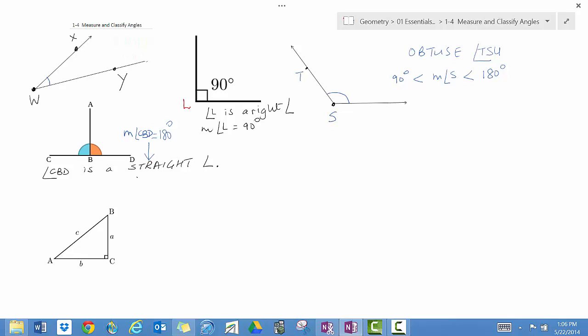It is an angle that is less than 90 degrees, and it is called an acute angle. So, we say this is an acute angle, and the measure of angle W is greater than 0 and less than 90.